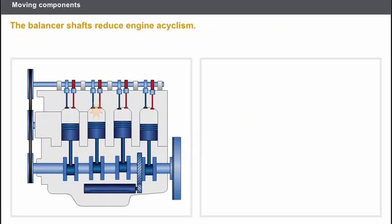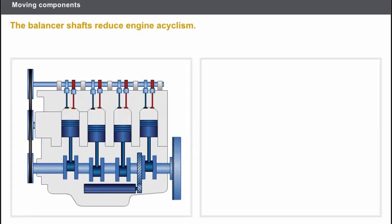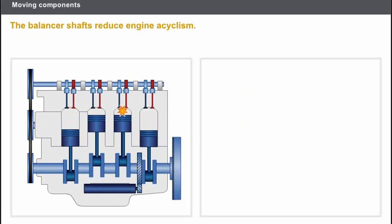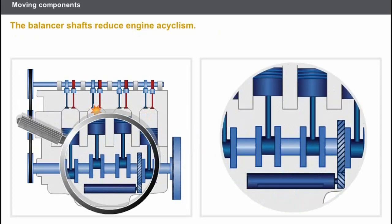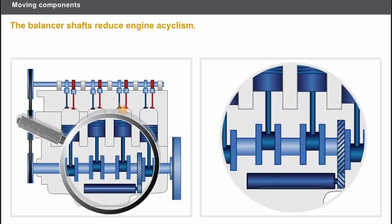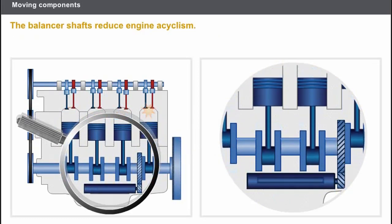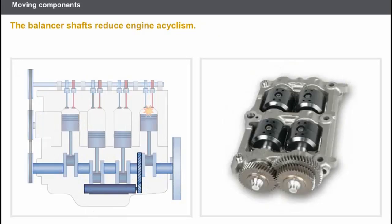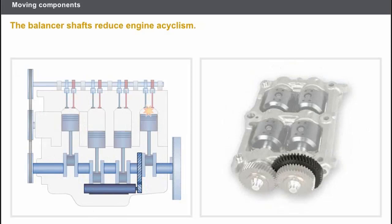The balancer shafts reduce engine acyclism generated by the forces caused by combustion. They turn twice as fast as the crankshaft, as there are two returns to top dead centre per crankshaft turn. The balancer shafts mainly comprise the following components: two balancing weights, a drive wheel, and a balancer housing.